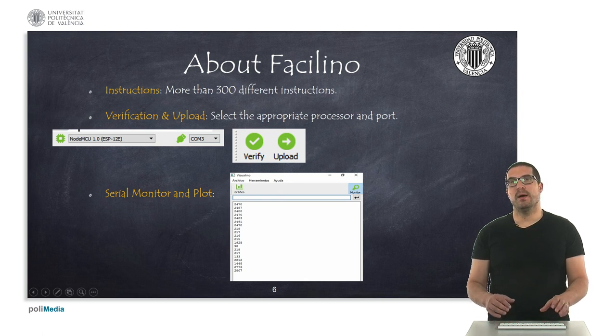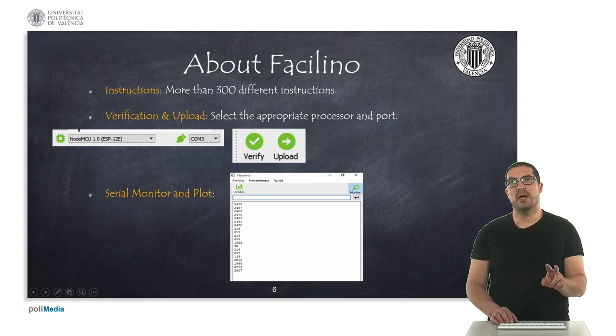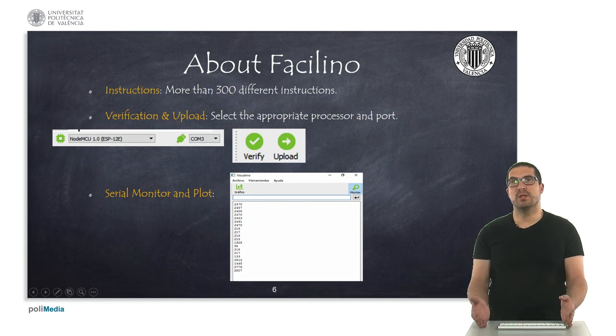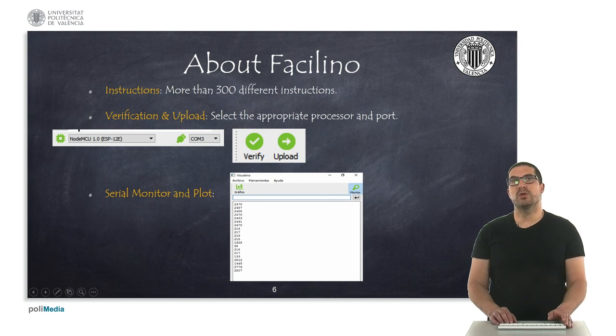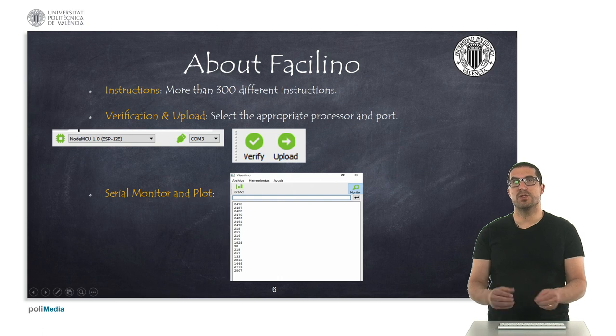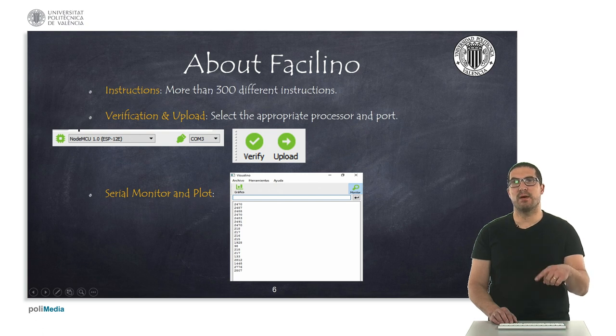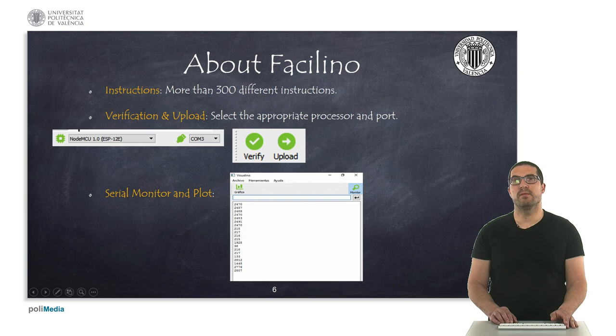In order to verify and upload your code you have these two buttons, the verify and upload. Verify means that we check that the code is correct and if everything is fine, you will see that the compilation has succeeded. And upload means that you are putting this code into your board, so it will be executed actually in your board. But before that, what you have to do is to select the correct processor and the correct COM port. And once you have your code uploaded, using the serial utility instructions, you can plot and display text numbers and things like that, or even display a graph in a plot using the serial monitor provided in Facilino.